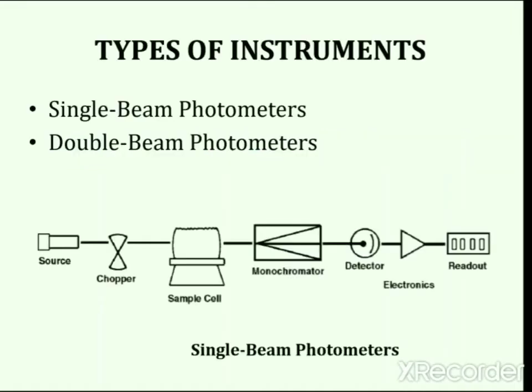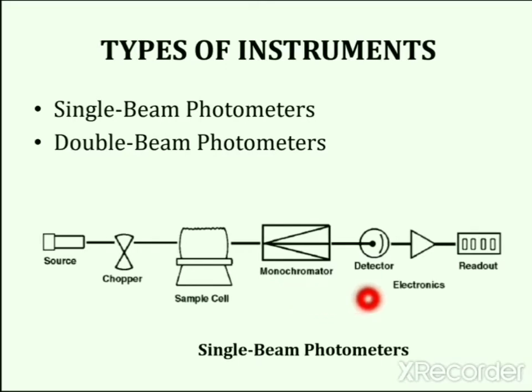Next is instrumentation of Atomic Absorption Spectroscopy. Atomic absorption spectrophotometers are of two types: single beam photometers and double beam photometers. The single beam instrument makes all measurements based on the varying intensity of a single beam of light in a single optical path.